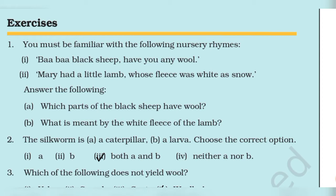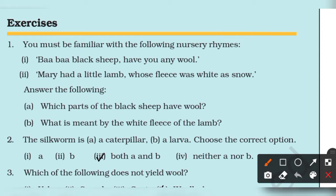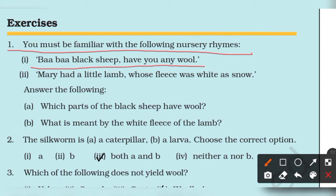Make sure to like the video and subscribe to the channel. So we will start question number one. You must be familiar with the following nursery rhymes. You have this rhyme when you were in the nursery class: 'Baa Baa Black Sheep, have you any wool?' This is a very popular nursery rhyme. The other one is 'Mary had a little lamb whose fleece was white as snow.'